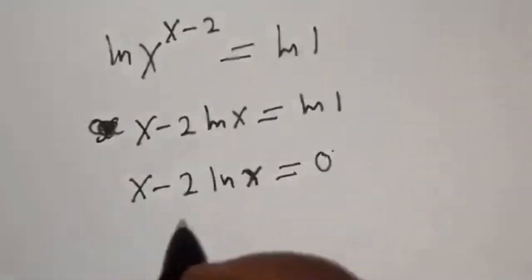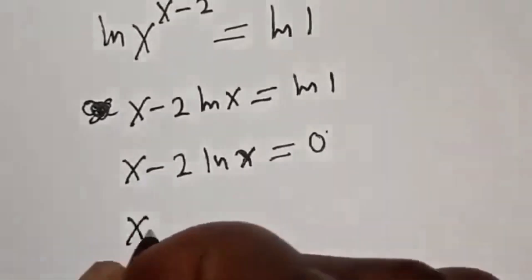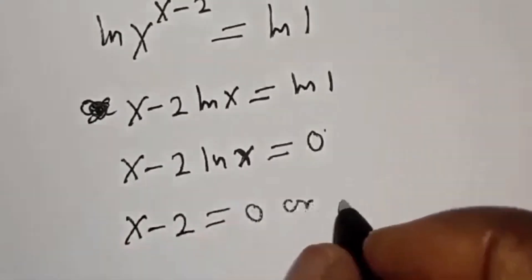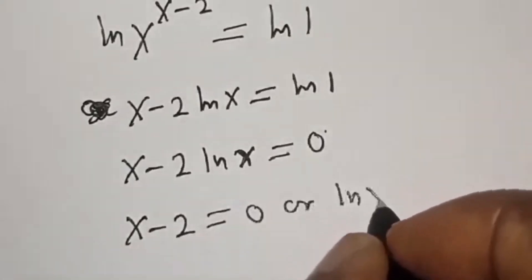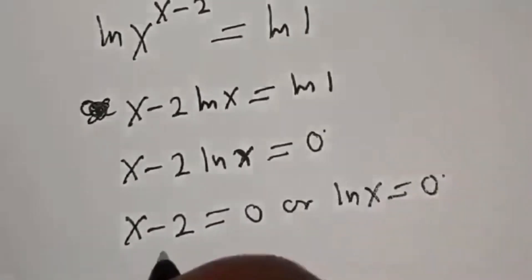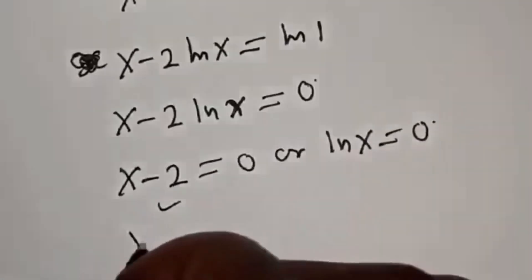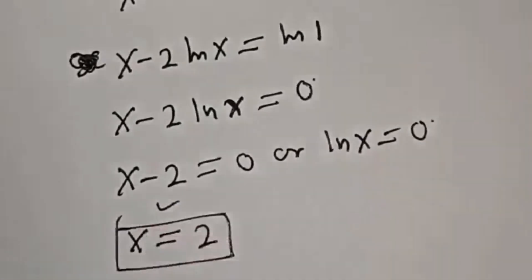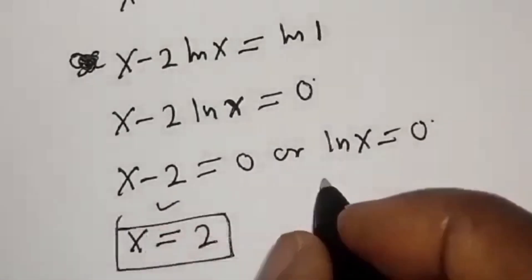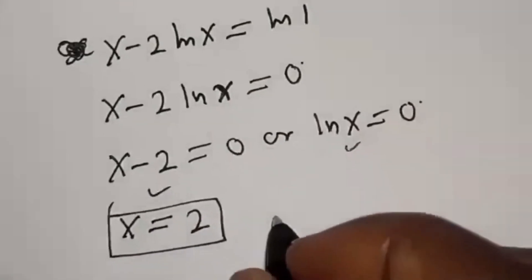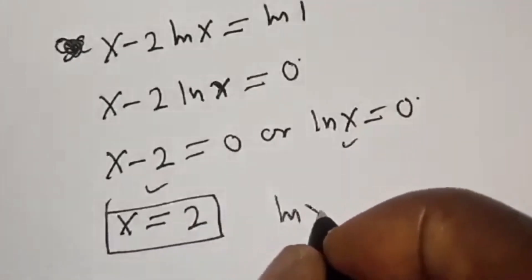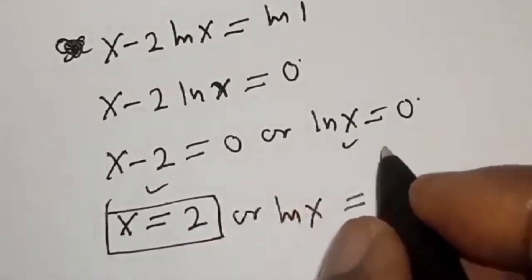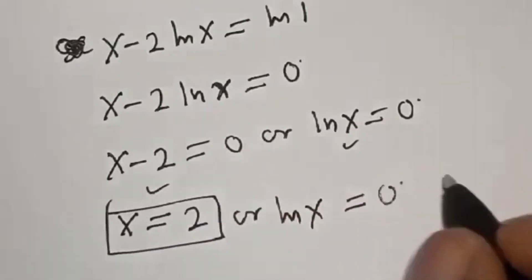We have two cases here: s minus 2 equals 0, or natural log of s equals 0. From the first case, s is equal to 2. That is the first value of s.